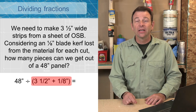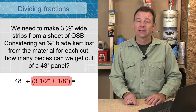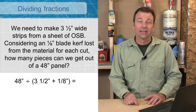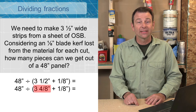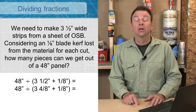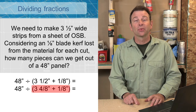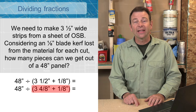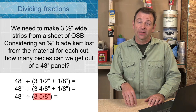The next thing we need to do is, since we're adding those two fractions together, they need to have common denominators. So we'll change our three and a half to three and four eighths — that's going to match our one eighth. Now that we have our denominators matching, we can add these two fractions together: three and four eighths plus one eighth is going to be three and five eighths.